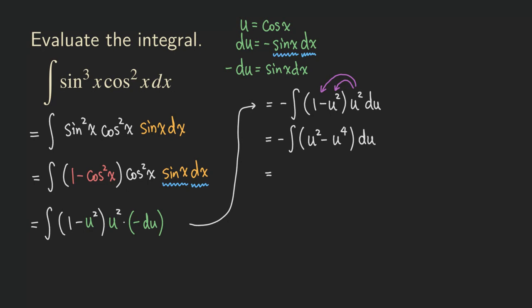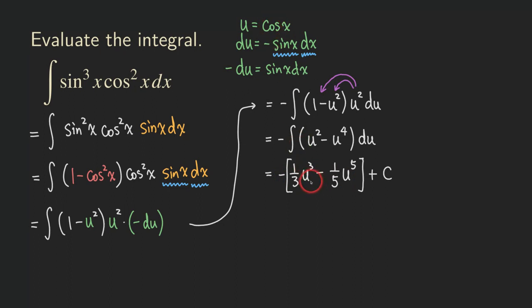Integrating u squared gives u to the 3rd over 3, and integrating u to the 4th gives u to the 5th over 5. So we get negative times (u³/3 minus u⁵/5), plus C. All we need to do next is distribute the minus sign on the outside to both terms and substitute cosine x back in for u.